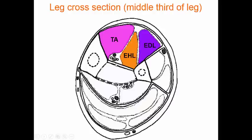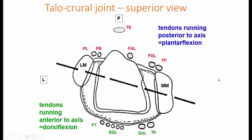Bearing in mind that structures which cross the ankle joint or talocrural joint posteriorly will cause plantar flexion, which is true flexion. While tendons running anterior to the ankle joint will cause dorsiflexion, or true extension.